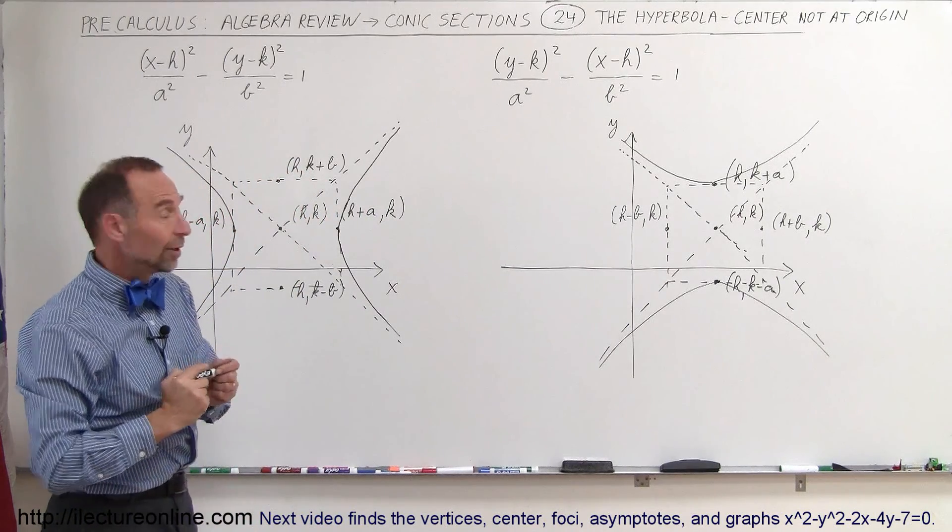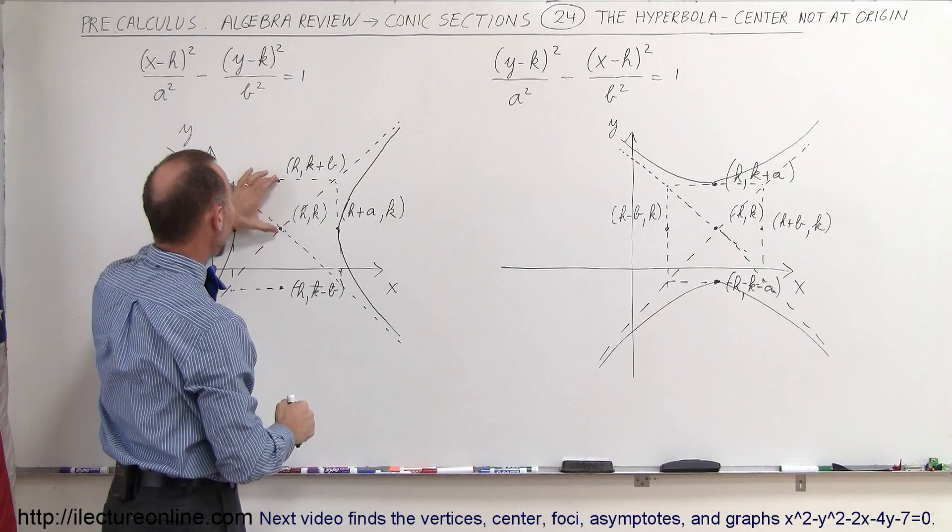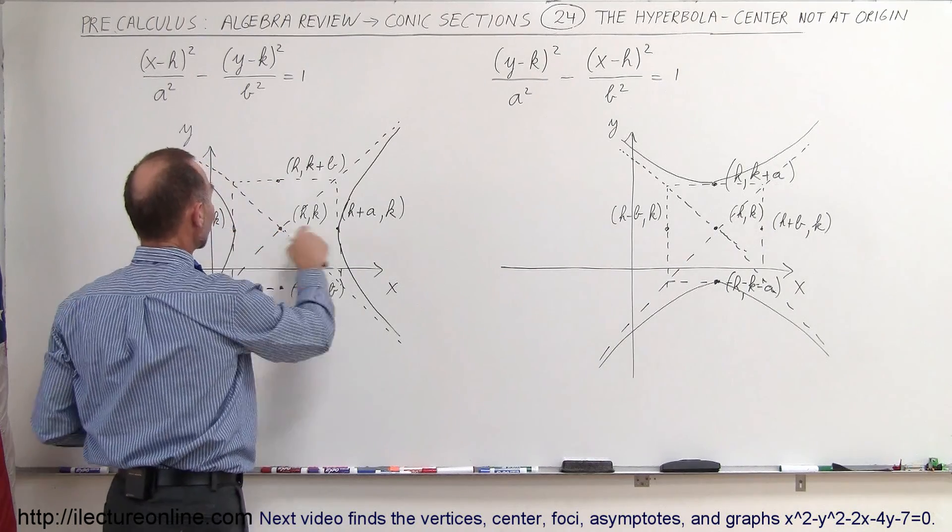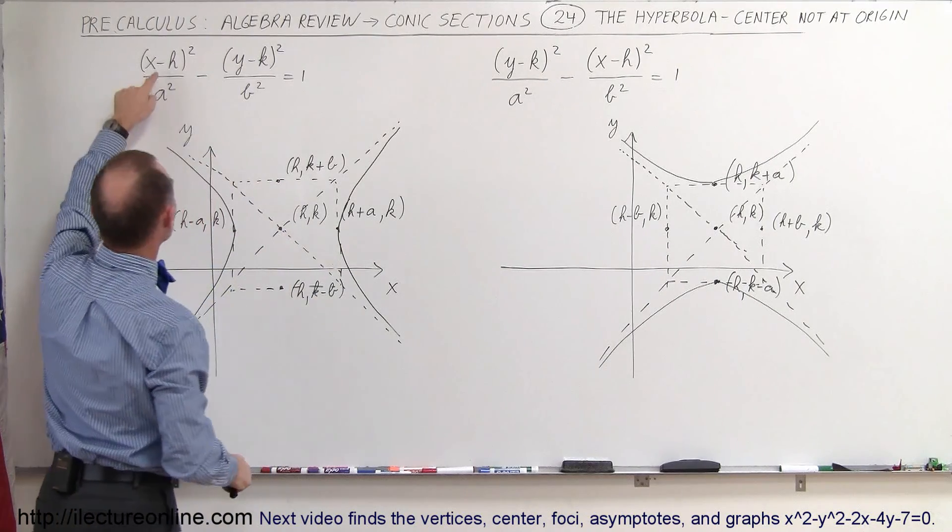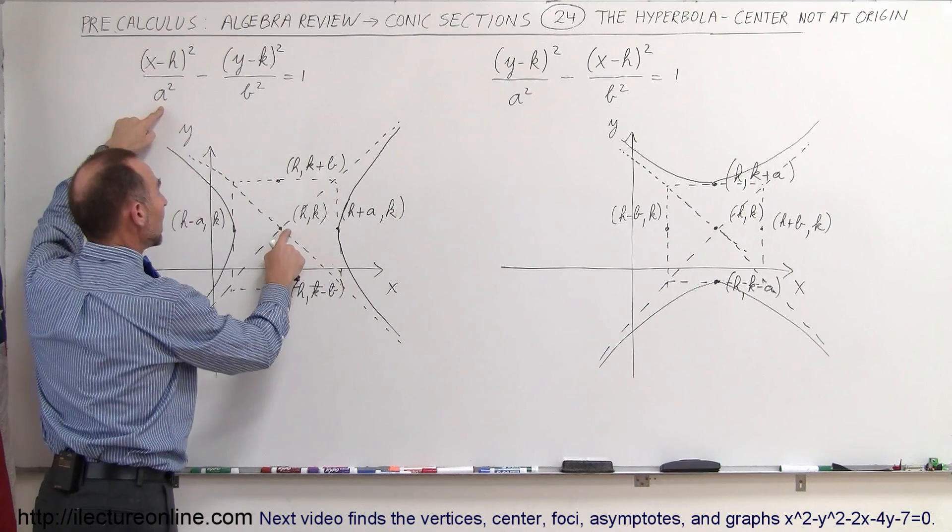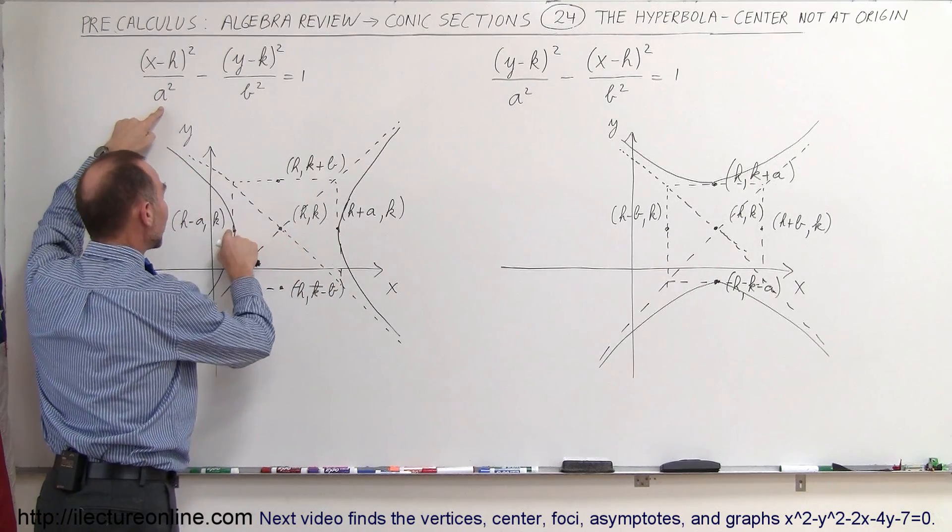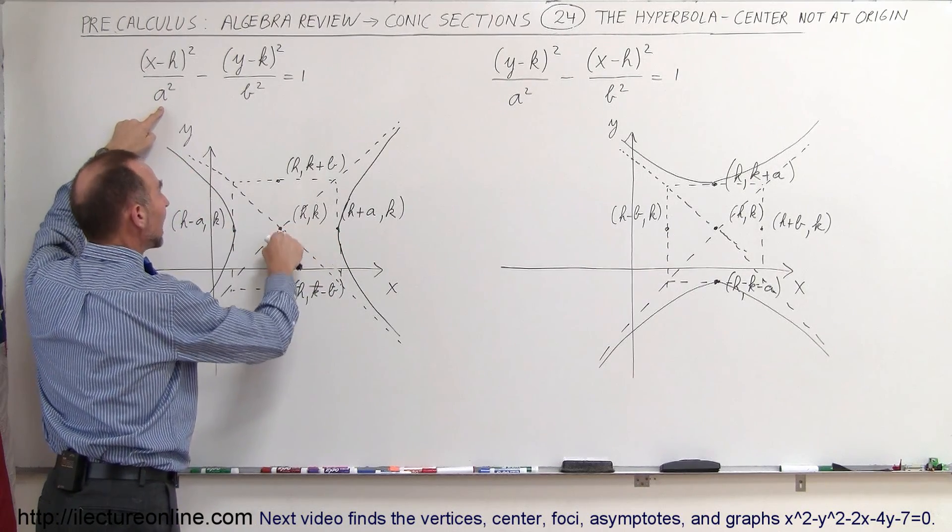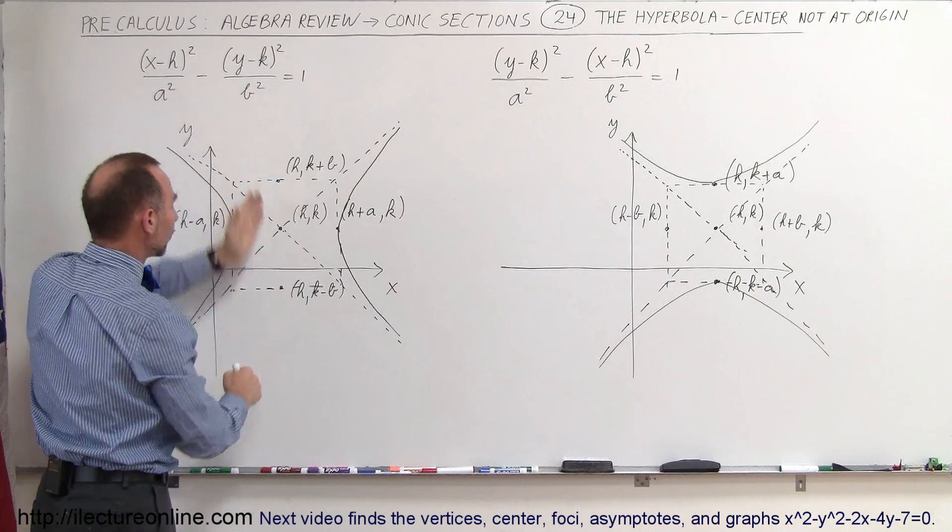So all we have to do is find the centers, then find the offset in the y direction, find the offset in the x direction. Remember, in the x direction will be a, so it's h plus a and h minus a in the horizontal direction. It will be k plus b and k minus b in the vertical direction.